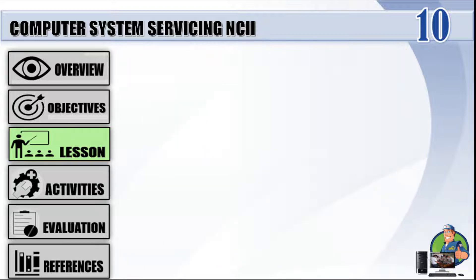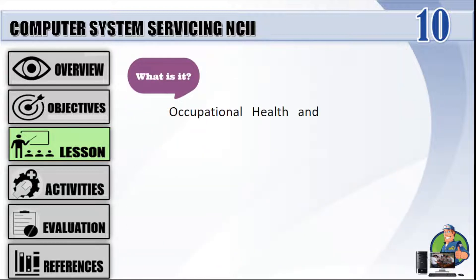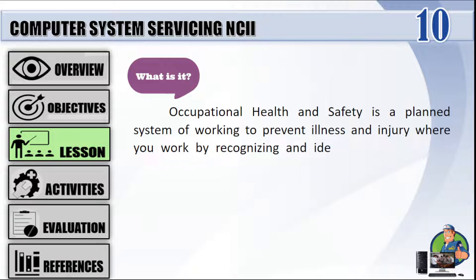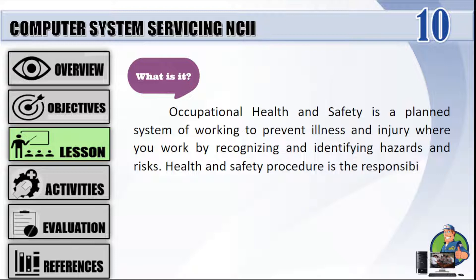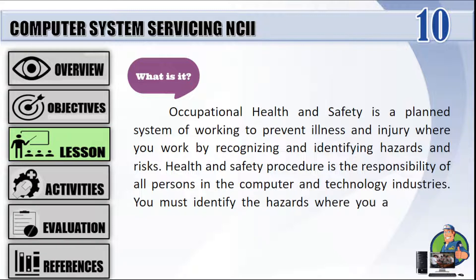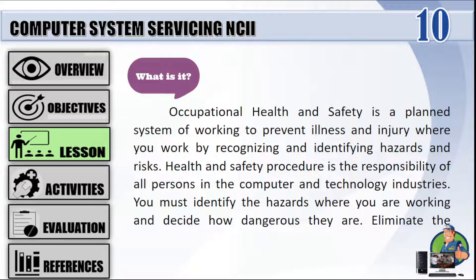Occupational Health and Safety is a planned system of working to prevent illness and injury where you work, by recognizing and identifying hazards and risks. Health and safety procedure is the responsibility of all persons in the computer and technology industries. You must identify the hazards where you are working, decide how dangerous they are, and eliminate the hazard or modify the risk that it presents.